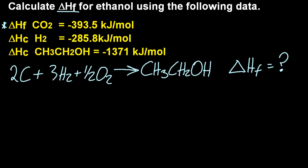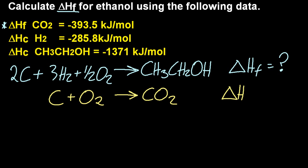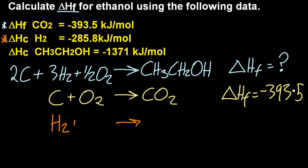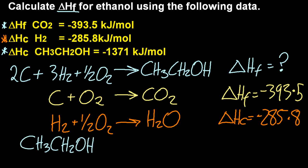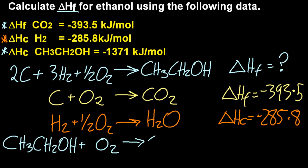Let me write out the other three equations. The heat of formation of carbon dioxide: making one mole of carbon dioxide from its elements in their standard state — carbon as C is fine, I checked the textbook. Next, the heat of combustion of hydrogen: burning one mole of hydrogen completely in oxygen. And finally, the heat of combustion of ethanol: burning one mole of ethanol completely in oxygen. People often balance this one wrong because there's an oxygen in the ethanol they forget about.